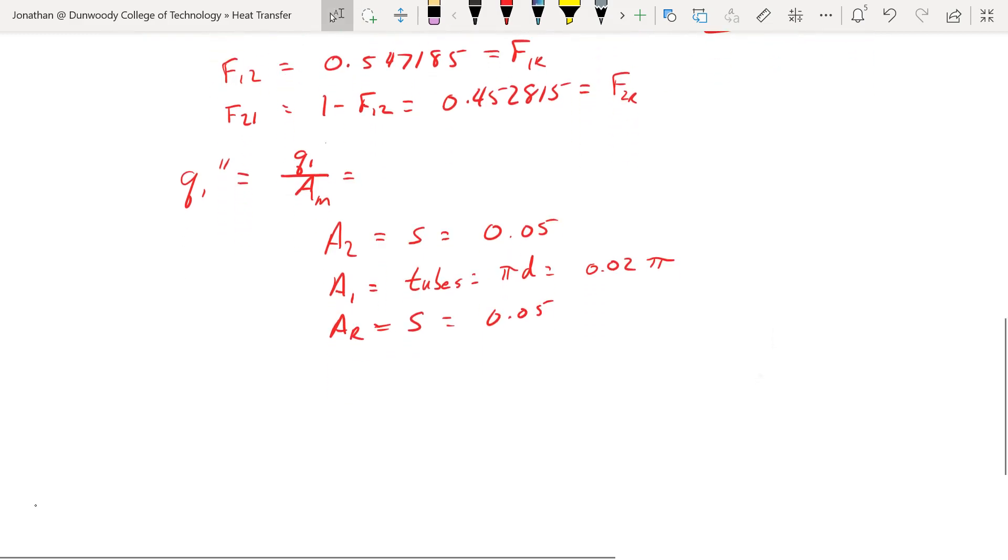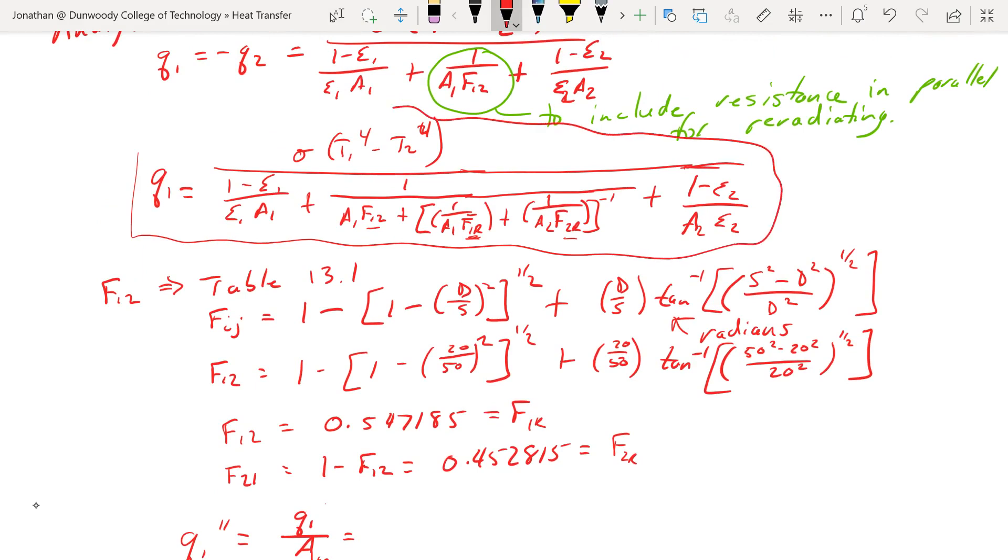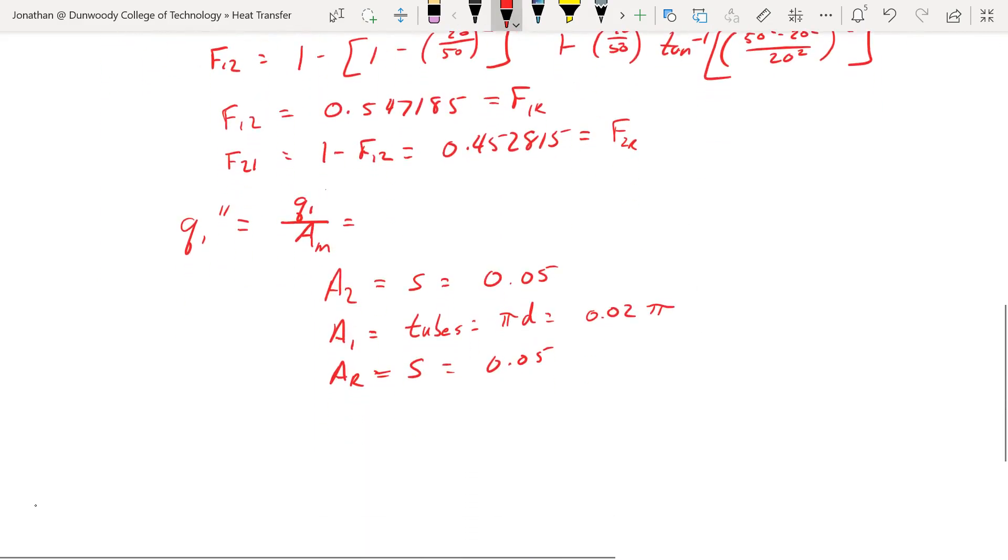So with that, I can plug it all into my equation here. So back up into this guy, and we should be able to get our Q1 net. So what do I get with that? I get Stefan Boltzmann, 1,000 to the 4th minus 500 to the 4th, all over 1 minus 0.87 times area 0.05, divided by 0.87 times pi 0.02.